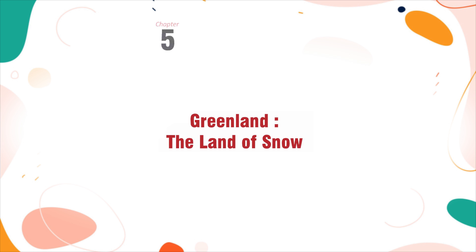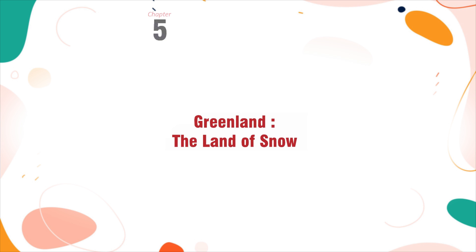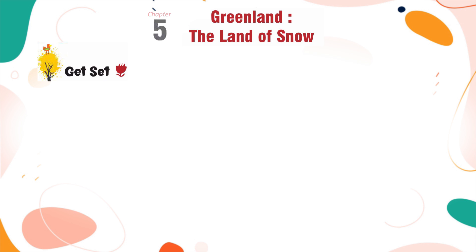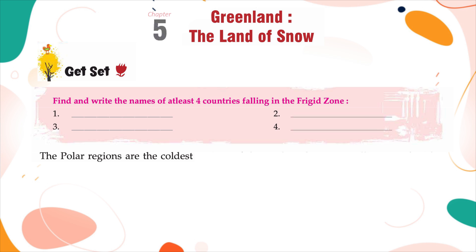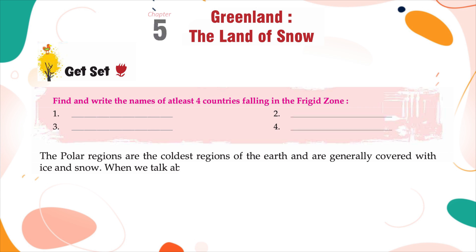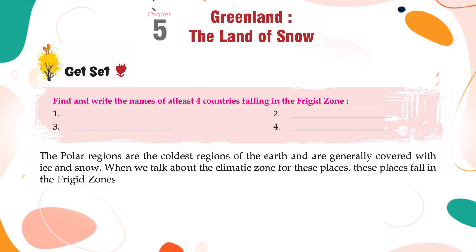Chapter 5: Greenland, the land of snow. Get set — find and write the names of at least four countries falling in the frigid zone. The polar regions are the coldest regions of the earth and are generally covered with ice and snow. When we talk about the climatic zone for these places, they fall in the frigid zones. They are located around the North Pole and the South Pole.